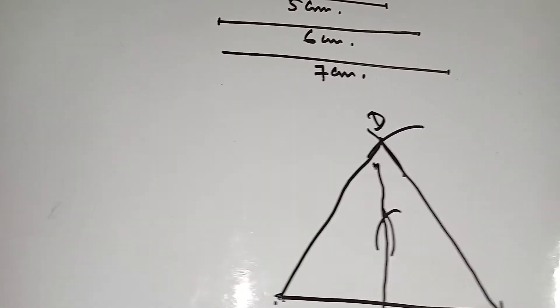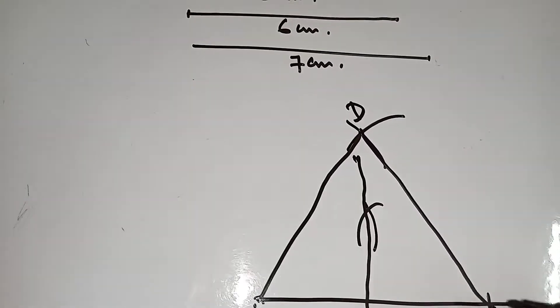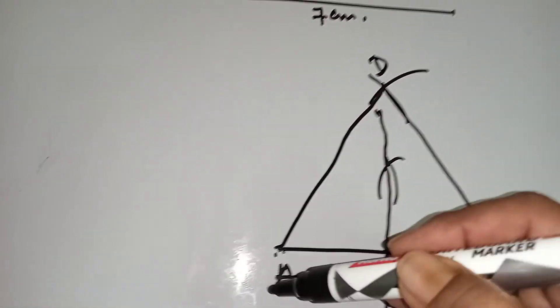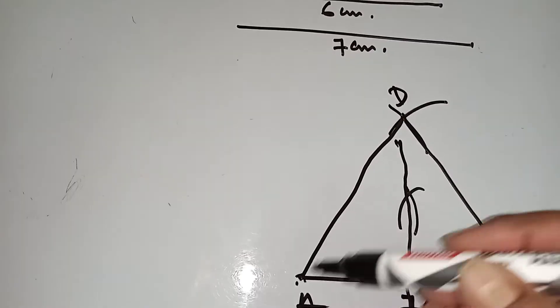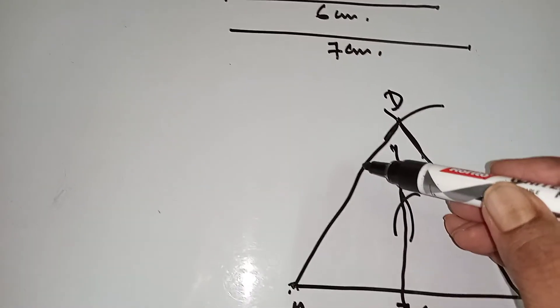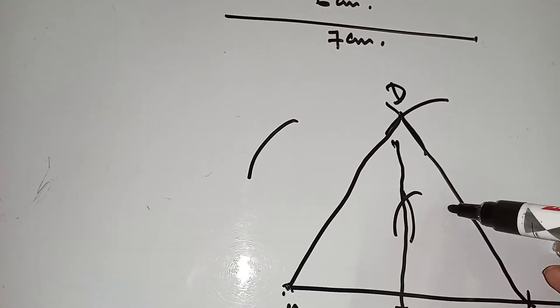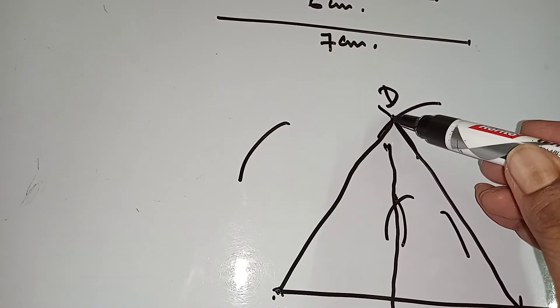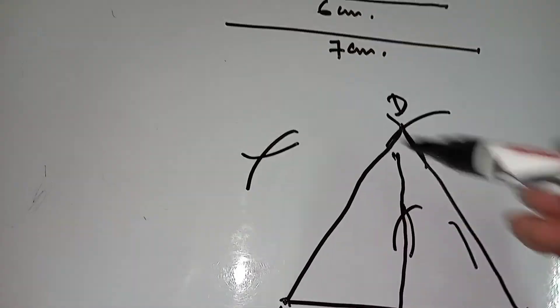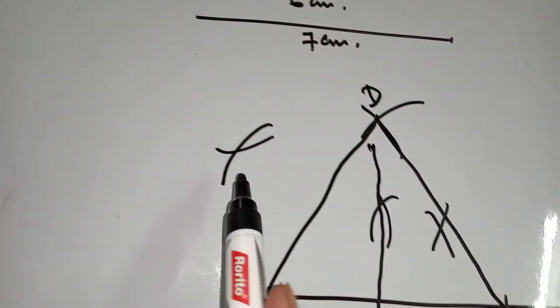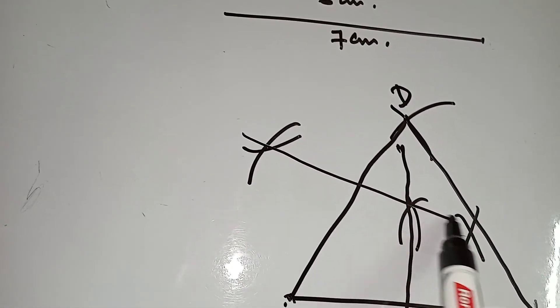Again, bisect B D or A D. Now bisect A D. Put here and take more than half radius and draw two arcs here and here. Again put here. Join this.